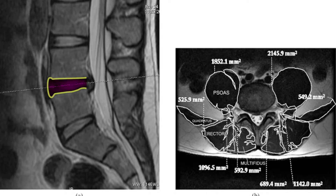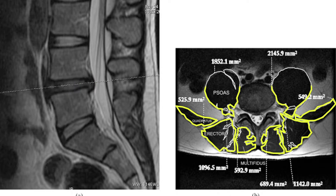This MRI scan shows a herniated disc — disc material has squirted out near the nerves compared to a normal disc. The image on the right shows all the different muscle groups that support the spine. The whole key about therapy and post-operative therapy with the spine is that by stabilizing these muscles and making them stronger, you take stress off the spine and much of the back pain goes away. But if the muscle is dead, that can't happen.